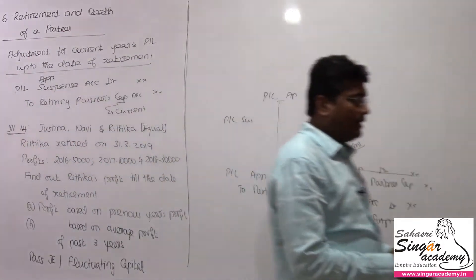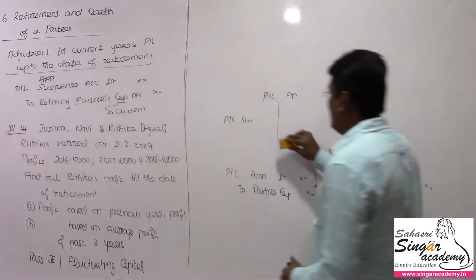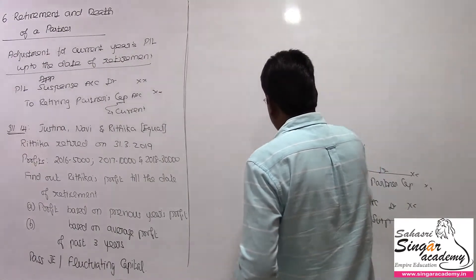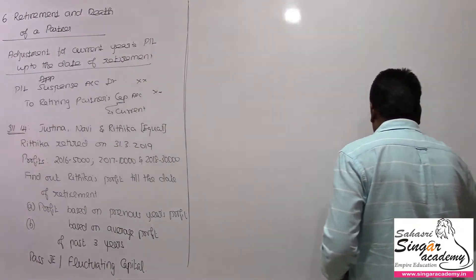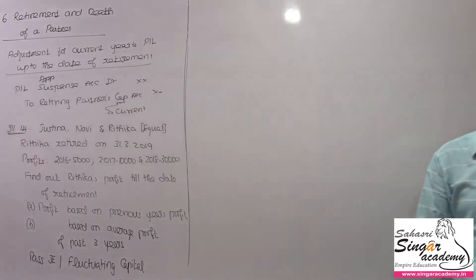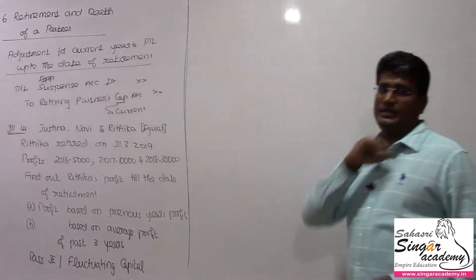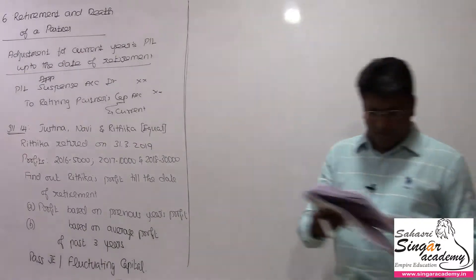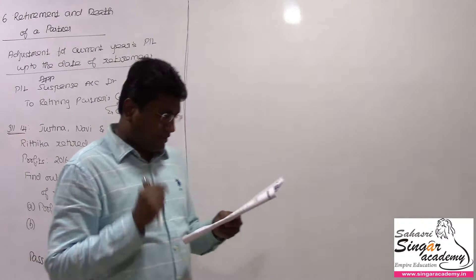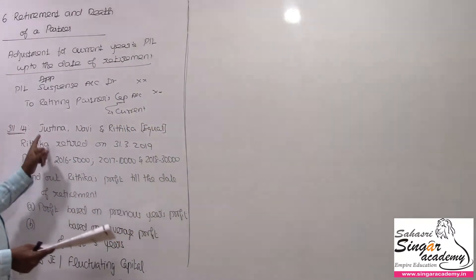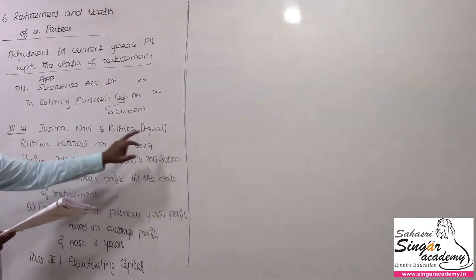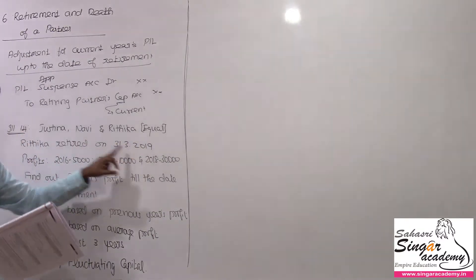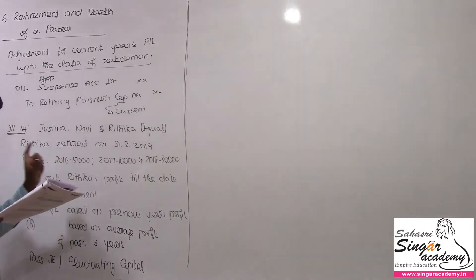The P&L Suspense account is used as on the date of payment; we don't prepare the final accounts at that point. We will see an illustration here for better understanding. Justina, Navi and Hrithika are partners sharing profits and losses equally. On 31st March 2019, Hrithika retired from the partnership firm.